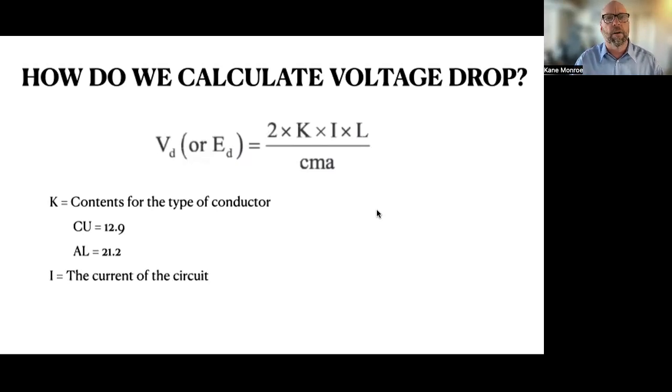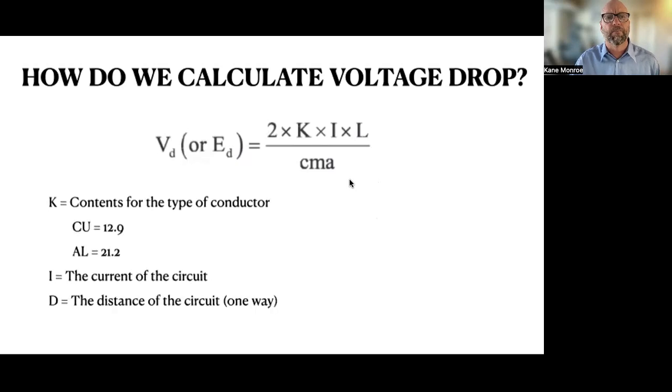So I is your current in Ohm's law. I equals current, so I is your current or your amperage of the circuit. D or L is your length or your distance of the circuit just one way. So from the panel to the end of the device is where you get your distance from.